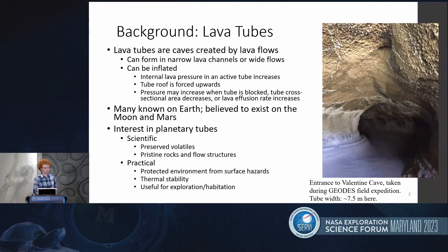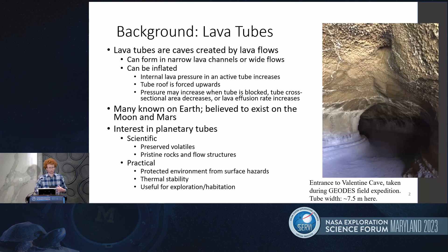There are many known examples of lava tubes on Earth, such as Valentine Cave in the Lava Beds National Monument shown on the right. These are also believed to exist on the Moon and Mars. We're interested in lava tubes on other planets for scientific and practical reasons: scientifically, because the protected environment inside could preserve volatiles that wouldn't survive on the surface and pristinely preserved rocks; and practically, because this protected environment could shelter astronauts or future habitats from surface hazards and temperature extremes.